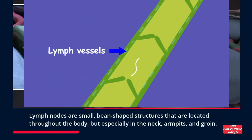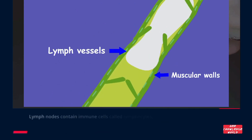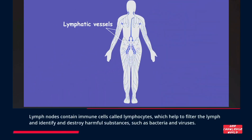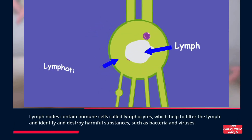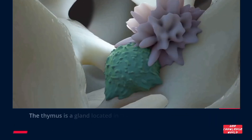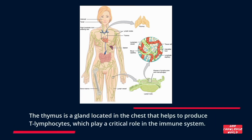Lymph nodes are small bean-shaped structures located throughout the body, but especially in the neck, armpits, and groin. Lymph nodes contain immune cells called lymphocytes, which help to filter the lymph and identify and destroy harmful substances such as bacteria and viruses.